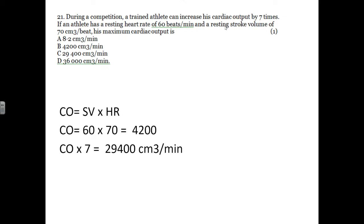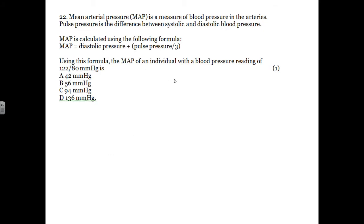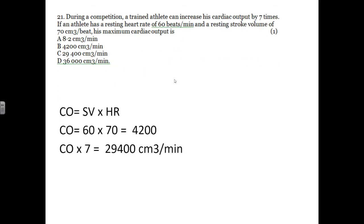During a competition, an athlete can increase their cardiac output by 7 times. If the athlete has a resting heartbeat of 60 and resting stroke volume of 70. So the maximum cardiac output is... So this is a trick question. So 6 times 7 is 42, so it's 4.2 litres. But they're then saying you can get 7 times higher than that. So 7 times 4,200 gives you 29,400.